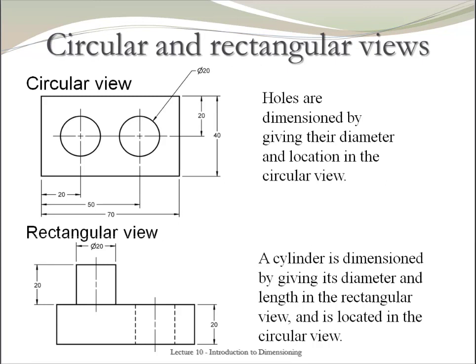Let's now talk about the circular and the rectangular views. Notice that these two views represent the same object. If you use a circular view, you provide the diameter and the position of the features. If you use a rectangular view, you provide the diameter, the length, or the depth of the features. In most cases, both views are required to provide the necessary information about an object.